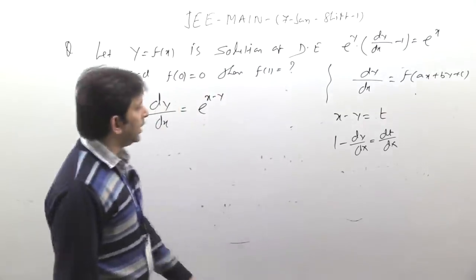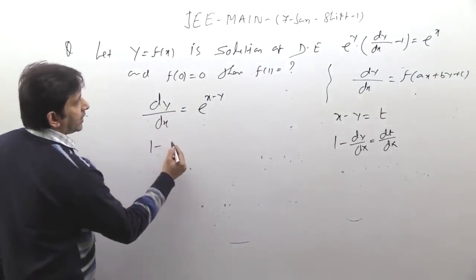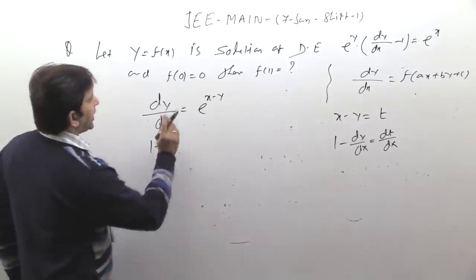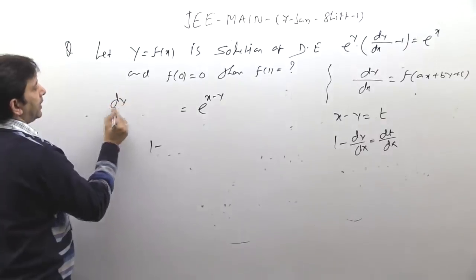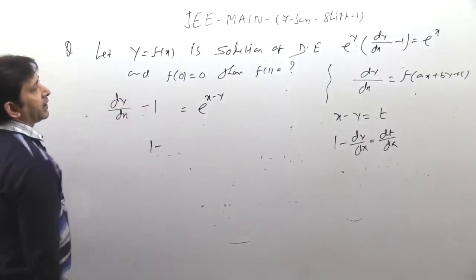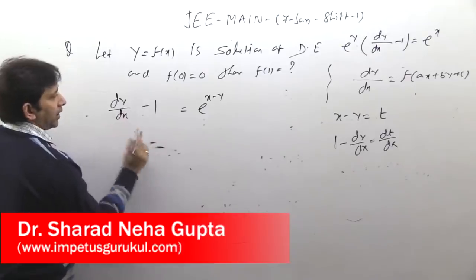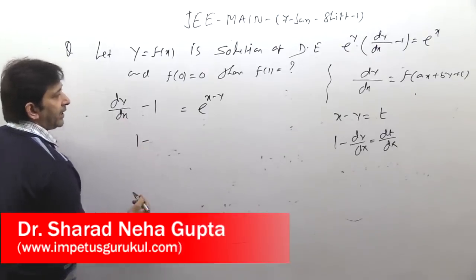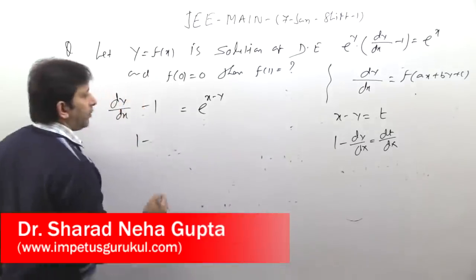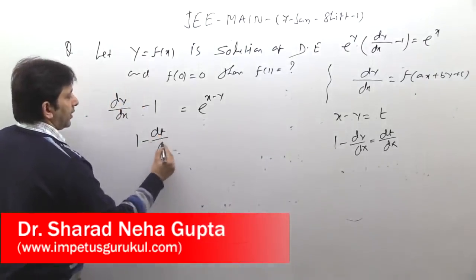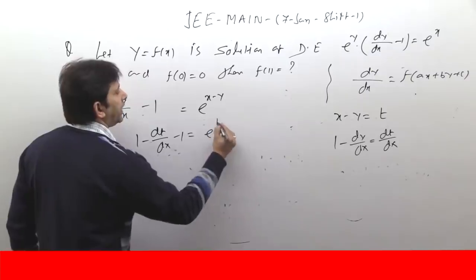So now dy/dx has a value of 1 minus dt/dx. This was the minus 1 term. So dy/dx minus 1 equals −dt/dx. Now substituting into the equation with e^(x−y) = e^t, I can rewrite it. The equation becomes separable in terms of t and x.